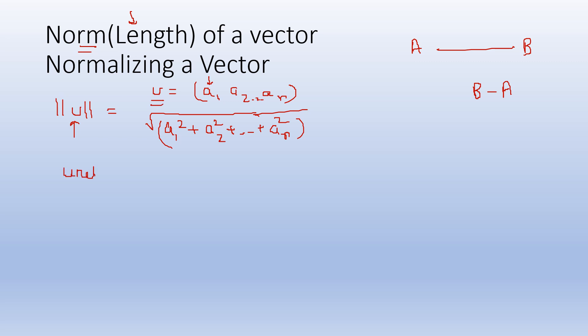A vector is a unit vector if its norm equals 1. If not, and the question asks for a unit vector, you do normalization: the unit vector Û = U / ||U||. This has the same direction as U but norm equal to 1.